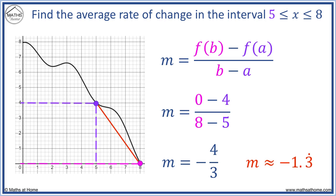The rate of change is negative because the slope of the red line is going down from left to right.